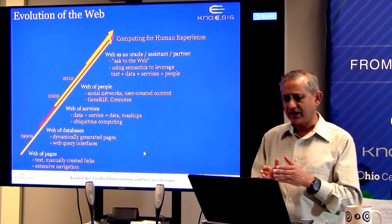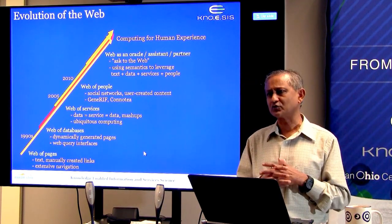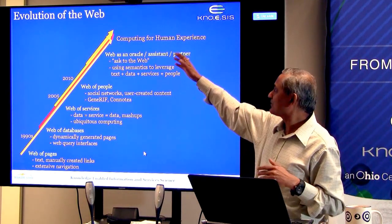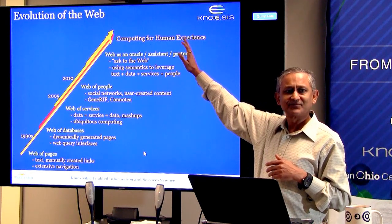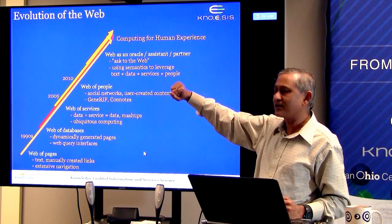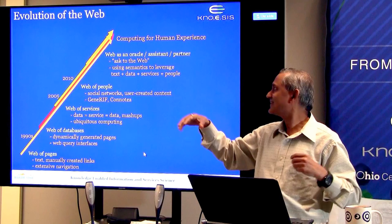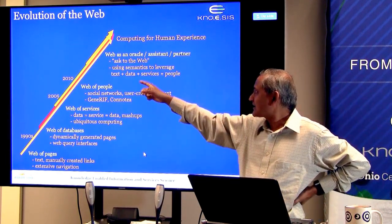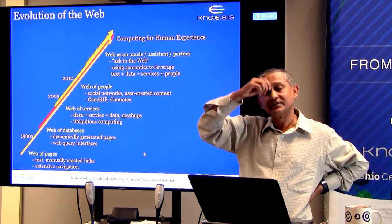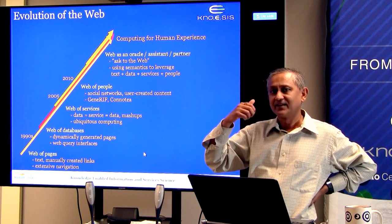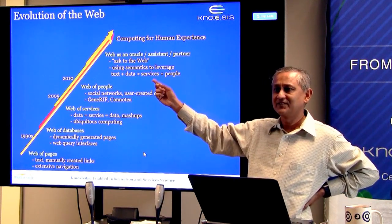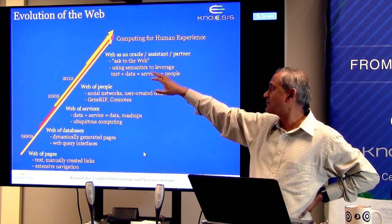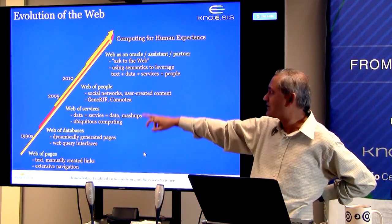This slide goes back to about 2005 or earlier. At this part, when the slide was created, it was quite far in the future. The vision was of the web as an oracle — you ask questions, it gives you answers, it knows everything — or as an assistant or partner, asking the web using semantics to leverage text, data, services, and people. About two years ago, this really started to happen. Siri was one of the pioneers in that context. This slide was presented in 2008, and it happened very soon.